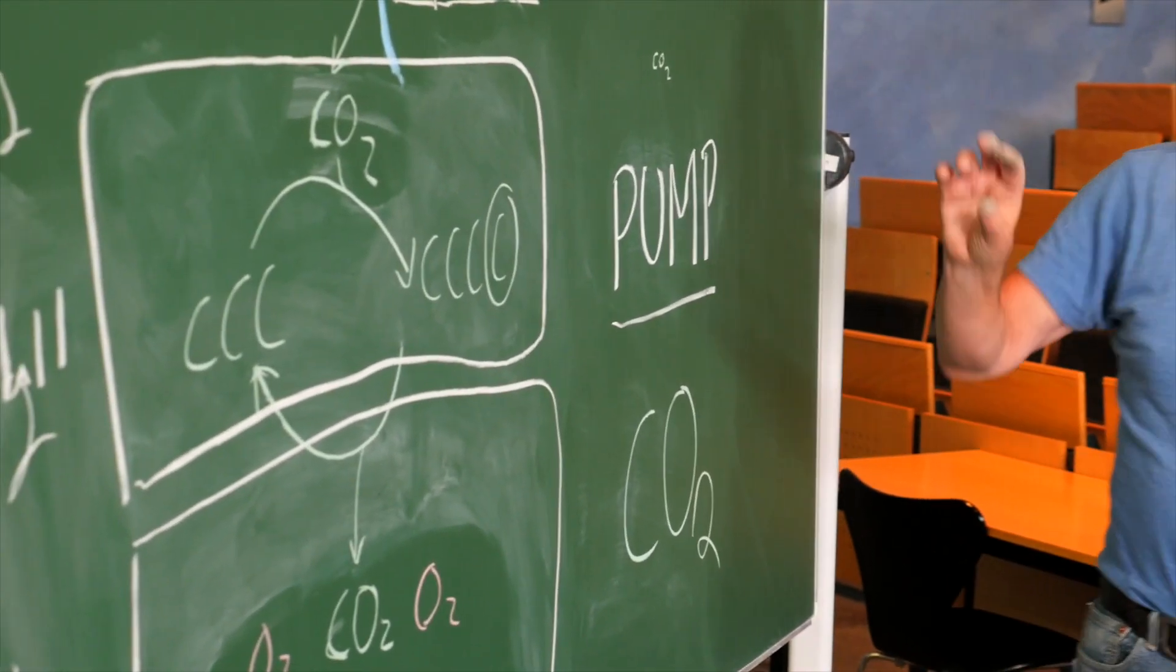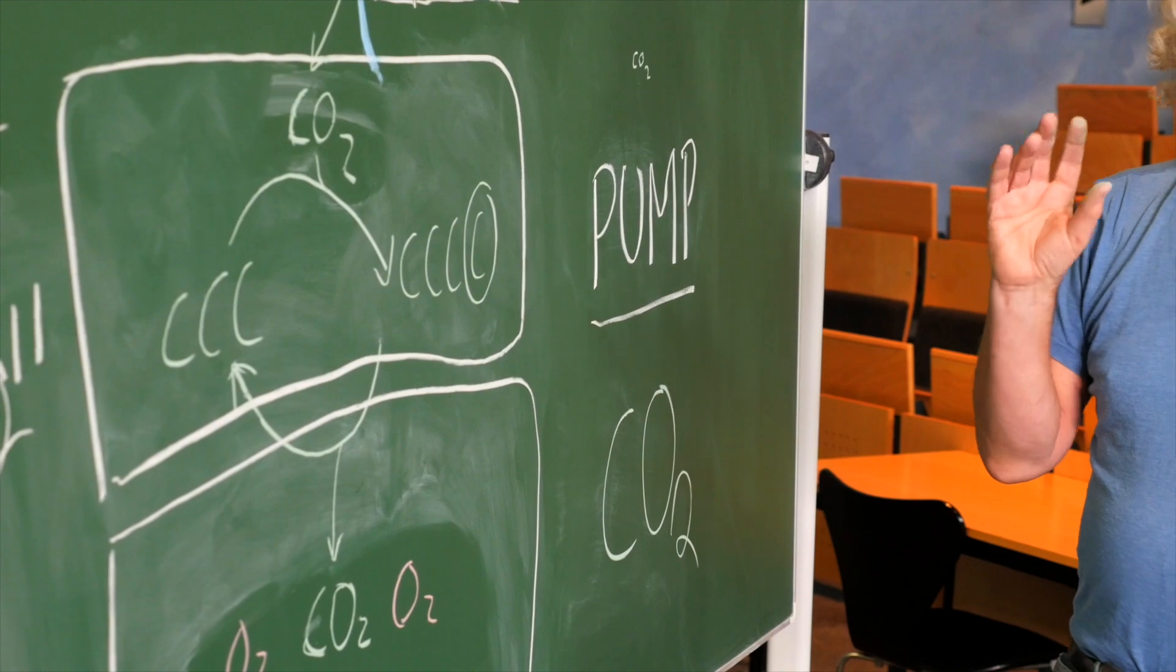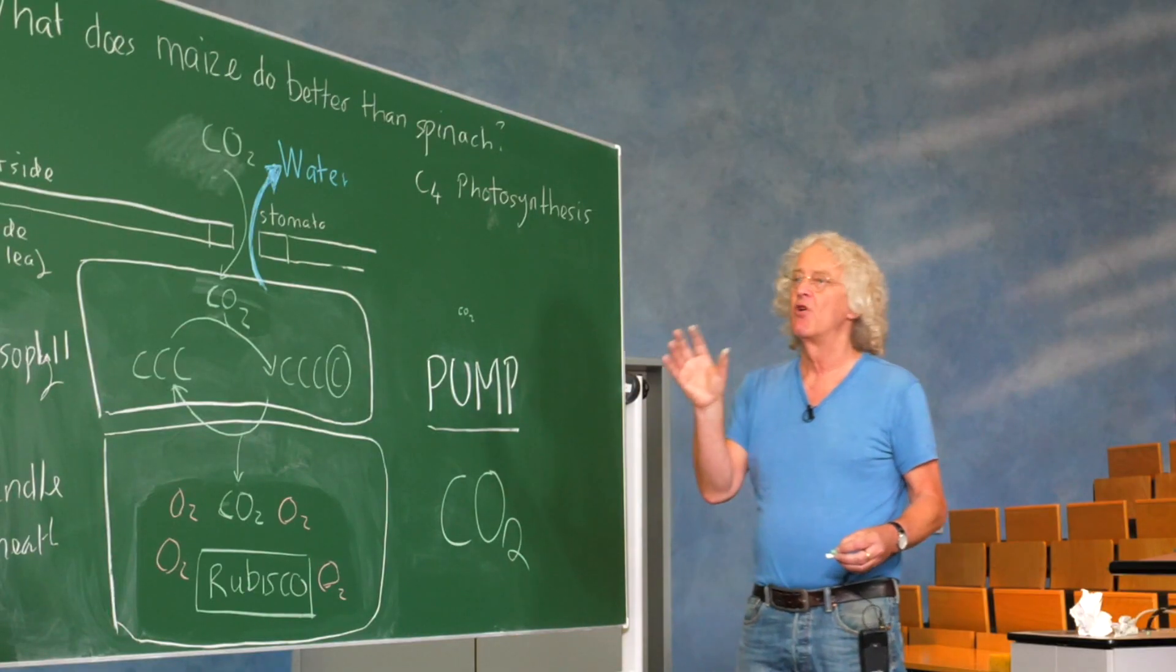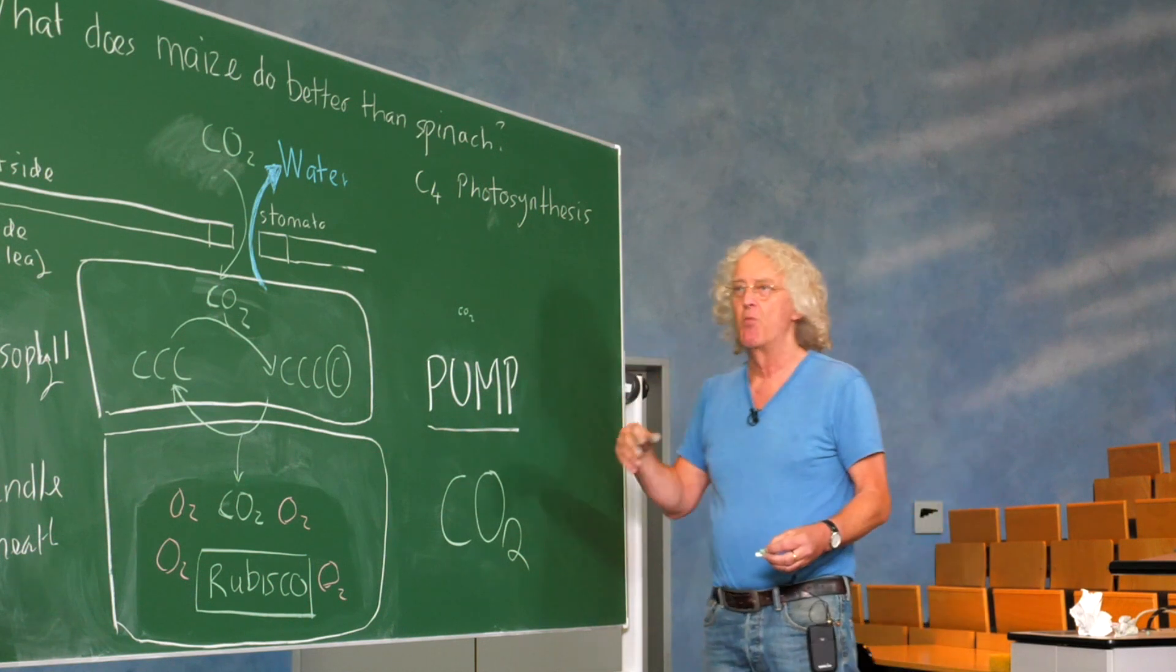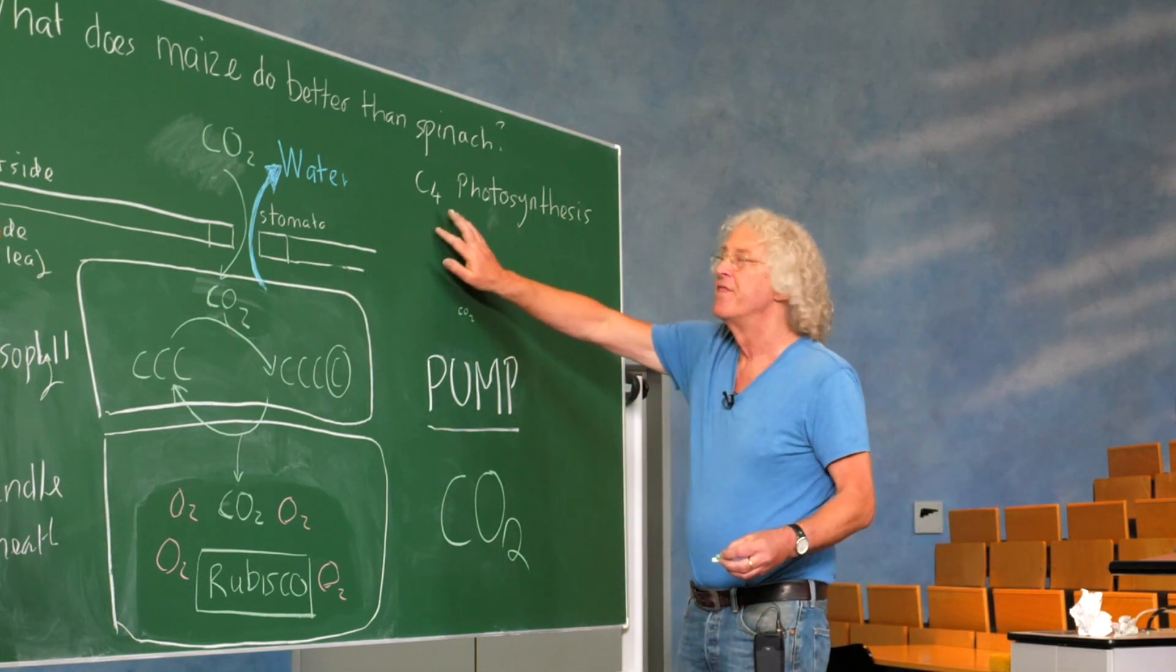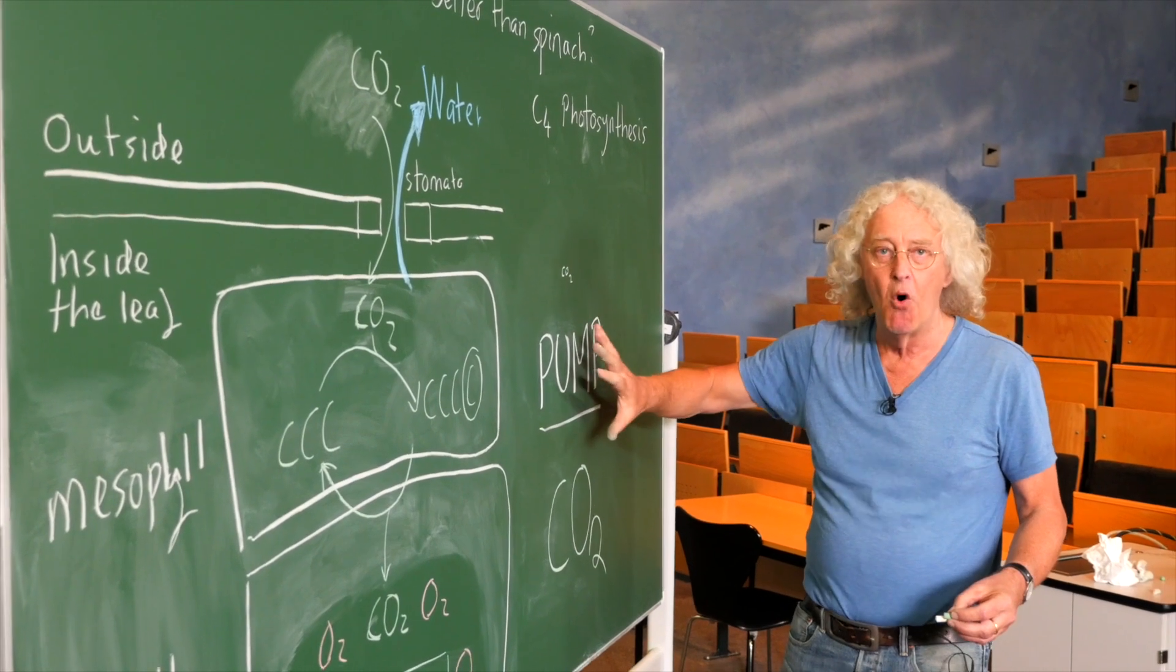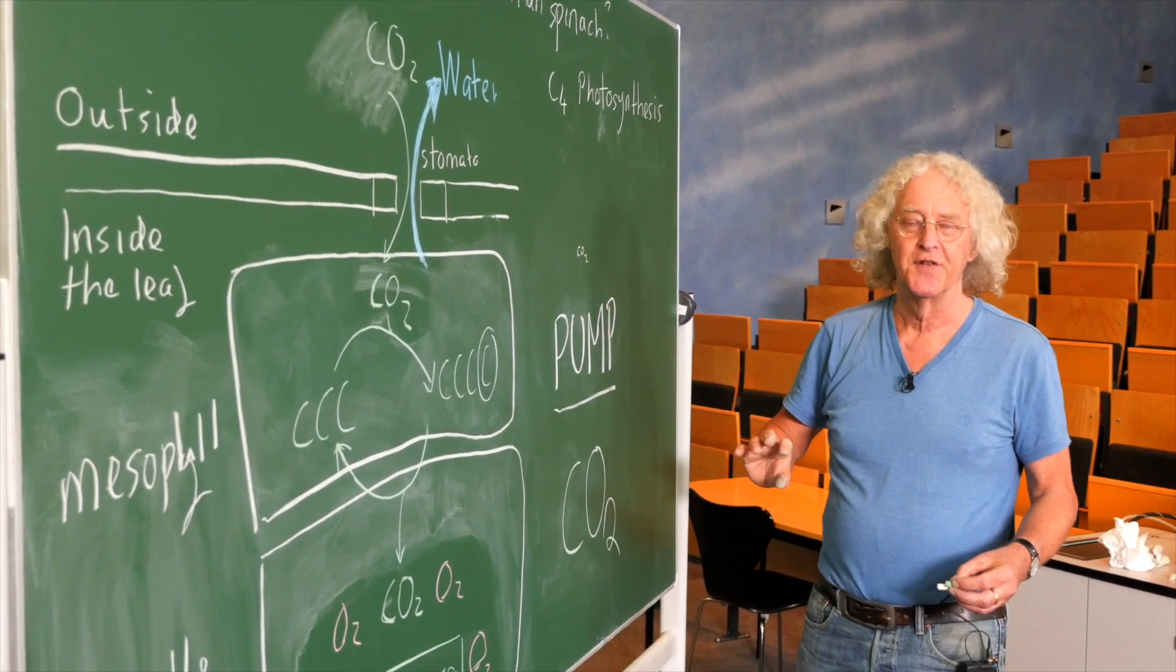And this means that C4 plants have an advantage when they're somewhere with high light, and probably also high temperatures, and not so much water. But when they're in wetter, colder areas, this has a disadvantage because it needs more light energy to carry out photosynthesis.